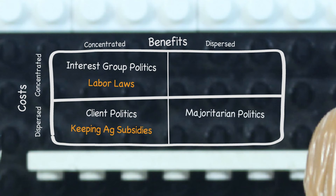When both the benefits and the costs are dispersed, we have majoritarian politics. In this case, we should be unlikely to see groups mobilize much, and instead it should really be about what the majority wants. An example might be community parks — the public both pays for these parks and enjoys them, so politicians should likely focus on what voters want if there are no interest groups involved.